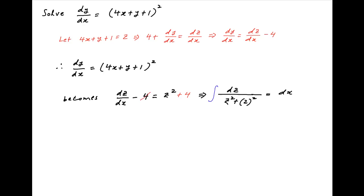Integrating both sides and introducing a constant of integration, say c upon 2, on the right-hand side, this becomes half of tan inverse z upon 2 equals x plus c upon 2. Multiply both sides by 2 and take the tangent.